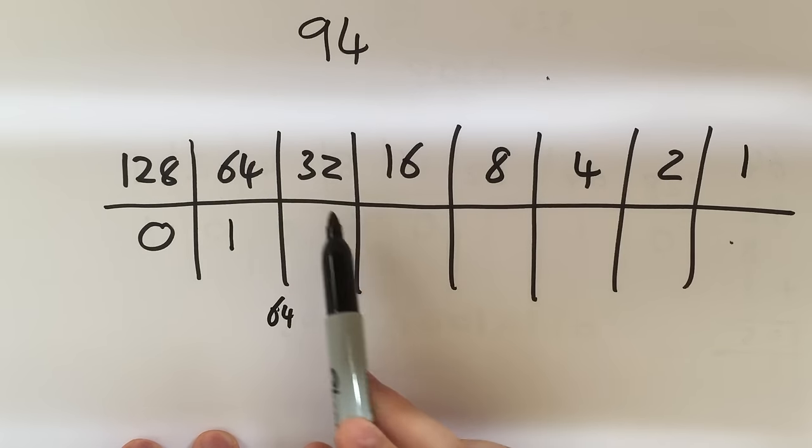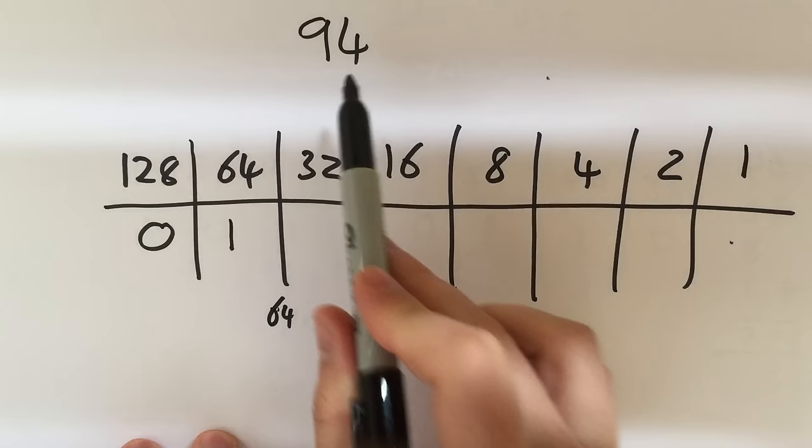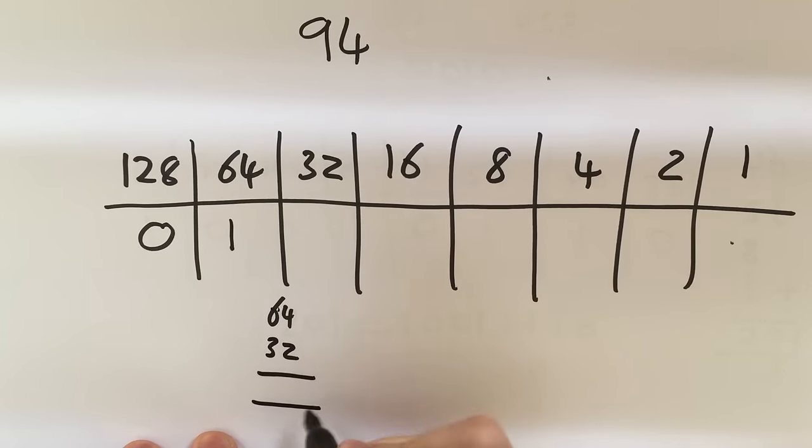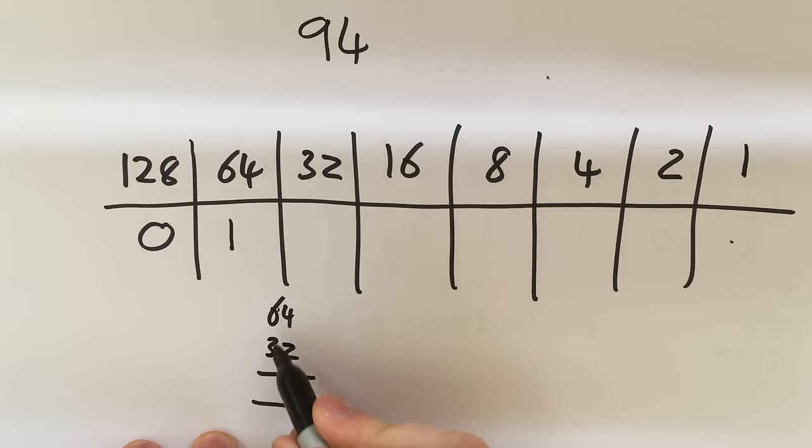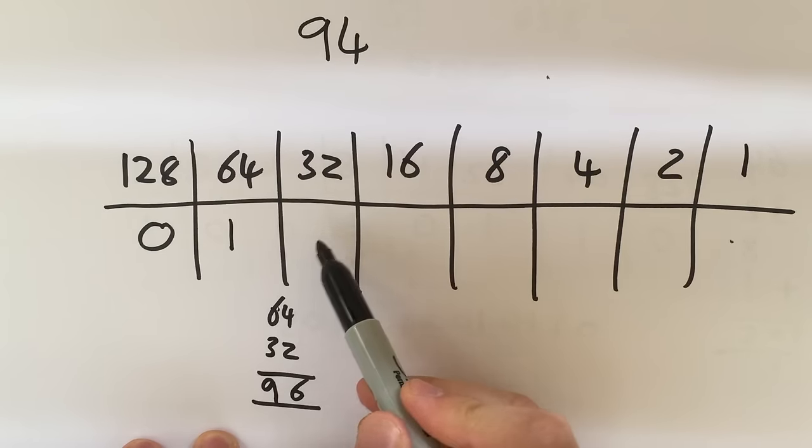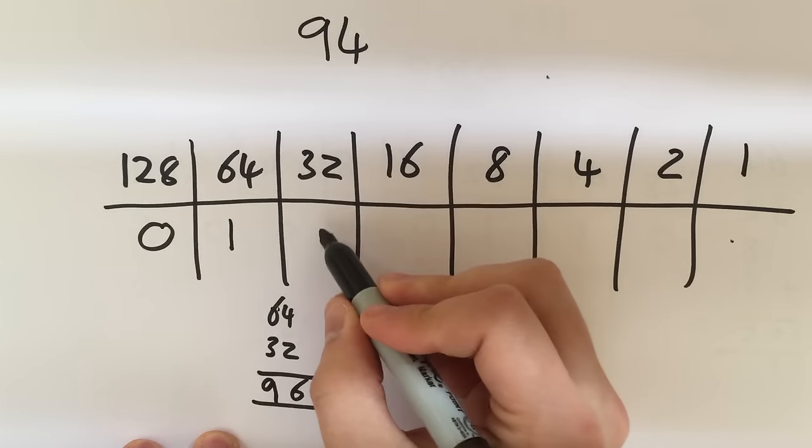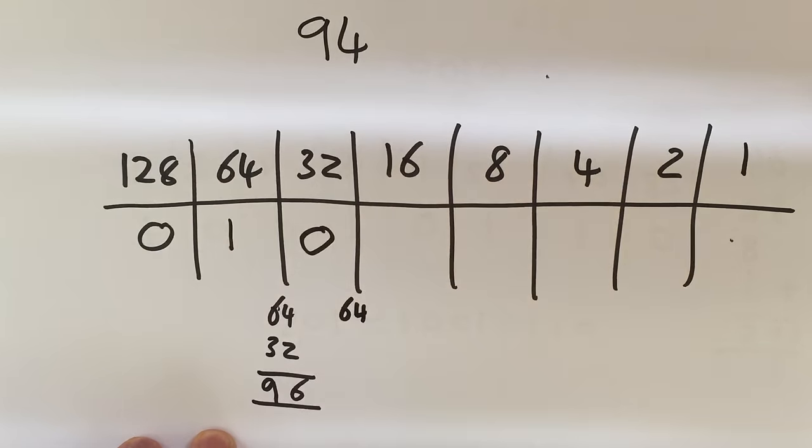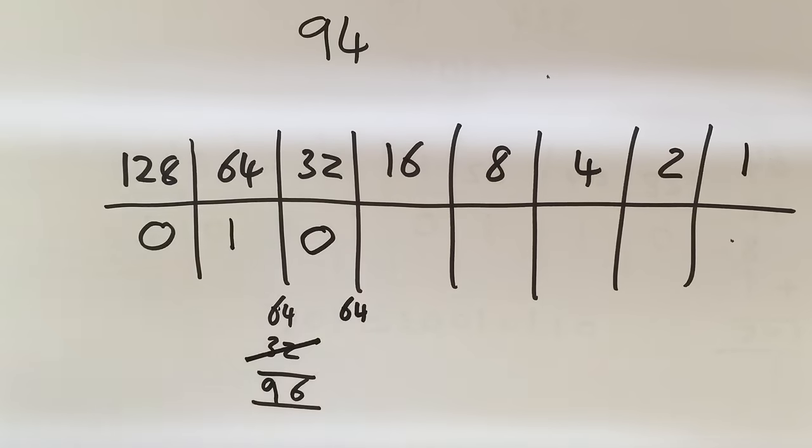So the next stage I need to do is if I added on 32, would I be over the top of 94? Let's just figure that out. I'm just going to write 32 underneath and add those two things up. 64 add 32 is, 4 add 2 is 6, 6 add 3 is 9, that gets me to 96. That's above the 94 which tells me that I can't add on 32 because I'm going to be over the top of it. So I know I'm at 0 here and I'm still only up to 64 with my number because I decided not to add on the 32.